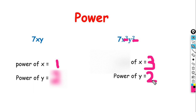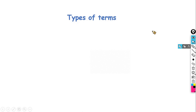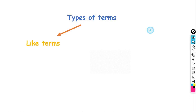Both these terms have the same variables, x and y, but the power of each of the variables are different. Next, let's look at the concept of the types of terms. There are two kinds of terms: like terms and unlike terms.